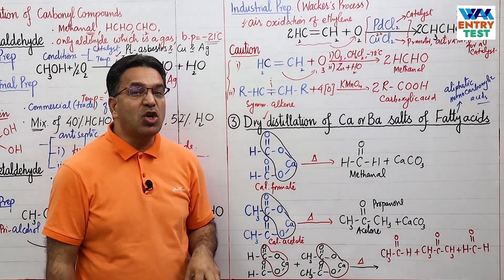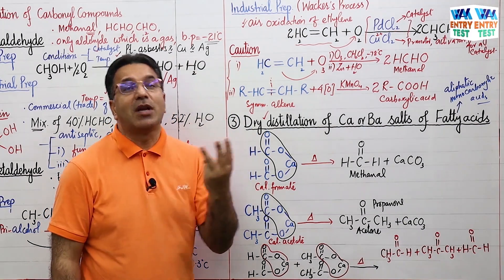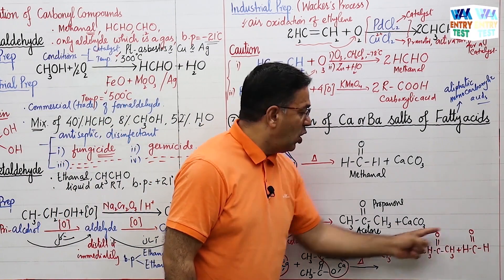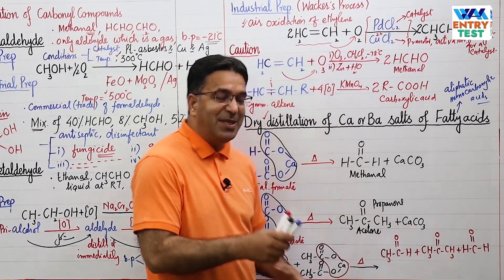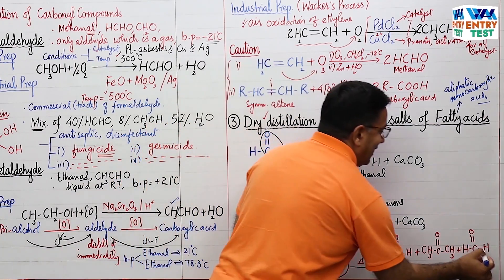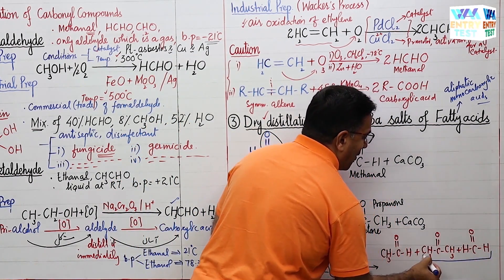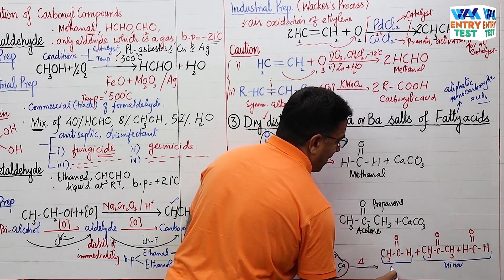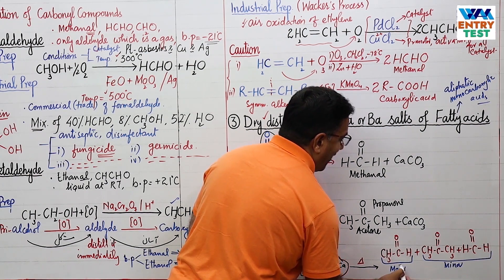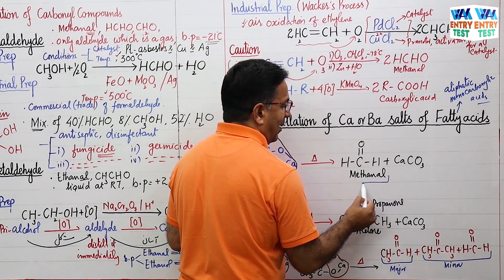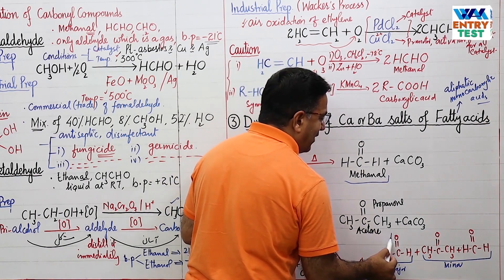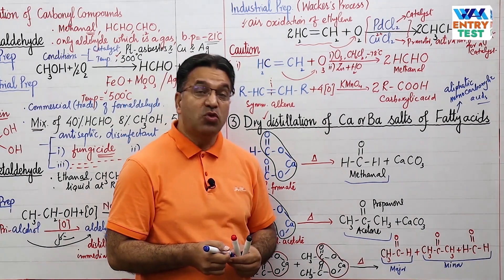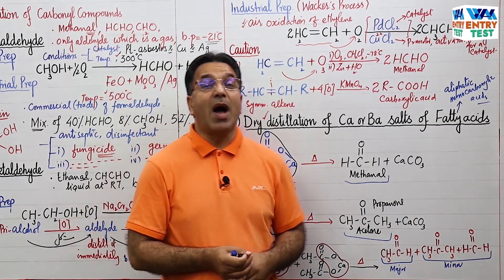When you have a mixture of calcium formate and calcium acetate, you get a mixture of three carbonyl compounds: acetaldehyde, formaldehyde, and acetone. Formaldehyde and acetaldehyde are minor products, while acetone is the major product. These three cases — pure formate, pure acetate, and the mixture — are the three reactions in your book.